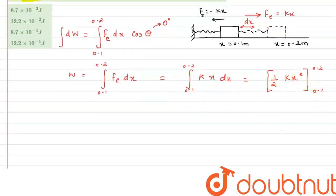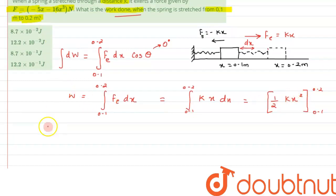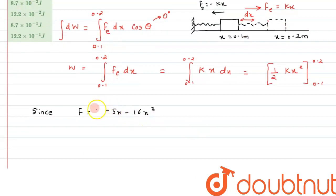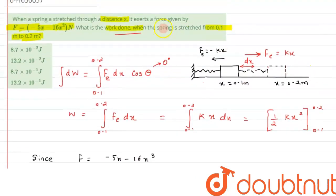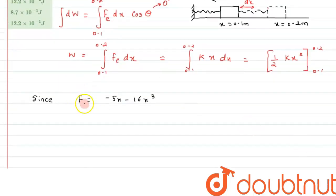So now we first have to calculate the value of k. As we have been given that, since F is equals to, we have been given with minus 5x minus 16x cubed. From here we can say, this is the spring force that has been given. Spring force is nothing but, this is the spring force.